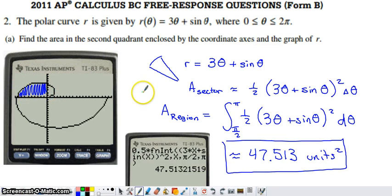When finding the area enclosed by a polar curve, we use the area of a sector of a circle. I took a slice of the region and isolated it. The radius is not constant because it depends on θ, given by r = 3θ + sin θ. The area of one sector is (1/2)r²Δθ.